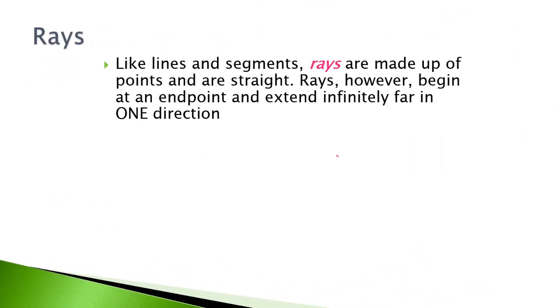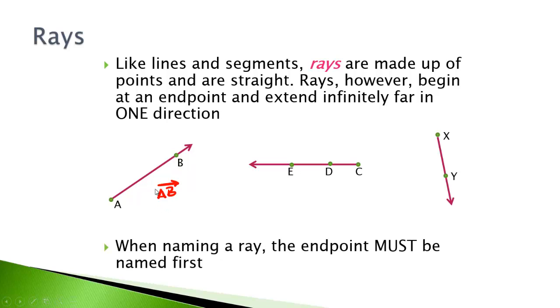Rays - a little bit trickier, not bad. Like lines and segments, rays are made up of points and are straight. However, they begin at one definite endpoint but extend infinitely far in one direction. So if you see a diagram of a ray, it will look like this. We would name this ray AB, and this is the only way that we could name this one. We could name this ray XY, and it's the only way we can name it.